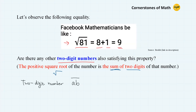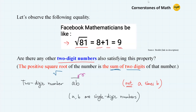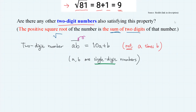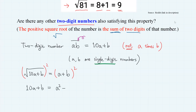In order to answer this question, let us consider a two-digit number AB (with a bar, to avoid confusion with the product of A and B). Then A and B must be single-digit numbers, and AB equals 10A plus B. So the condition can be written as: square root of (10A plus B) equals A plus B. Let's square both sides, obtaining 10A plus B equals A squared plus 2AB plus B squared.